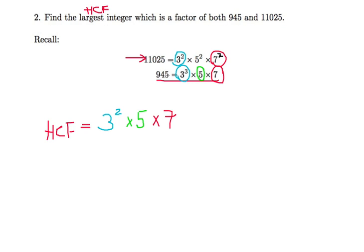So if we work this out, it's 9 times 5 times 7, so it is 315. So that's the answer. Thank you for your time. We'll do part three in the next episode. Bye.